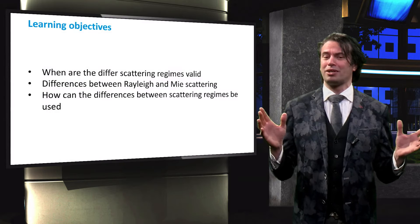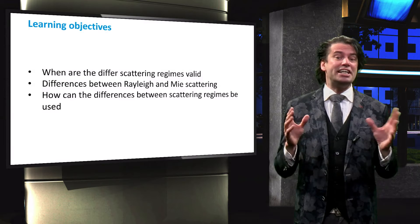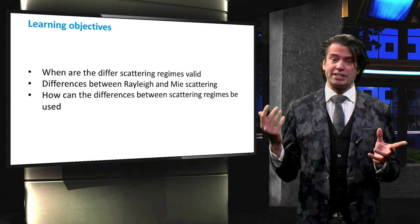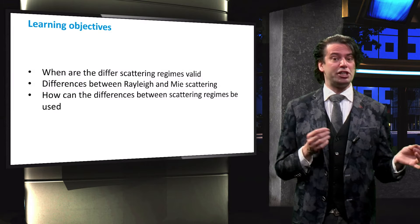In this video we will learn about the different scattering regimes and when each is valid. We will identify the difference between Rayleigh and Mie scattering. Finally, we will discuss how the differences between scattering regimes can be applied to further improve the performance of our solar cells.